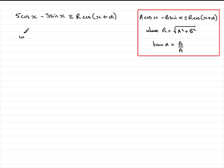So all we need to do is just say where R equals the square root then of A squared plus B squared, so that would be 5 squared plus 3 squared. And if you work that out, you've got the square root of 25 plus 9, that's the square root of 34. Just leave it like that.